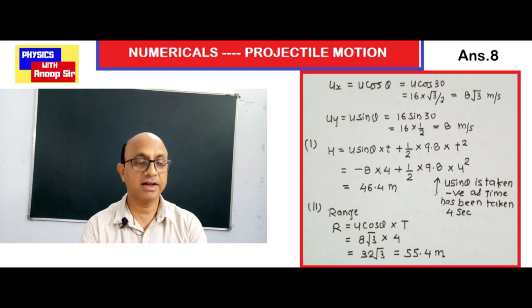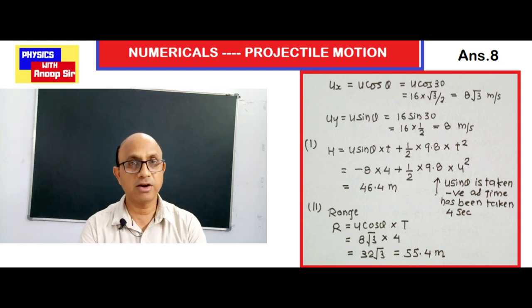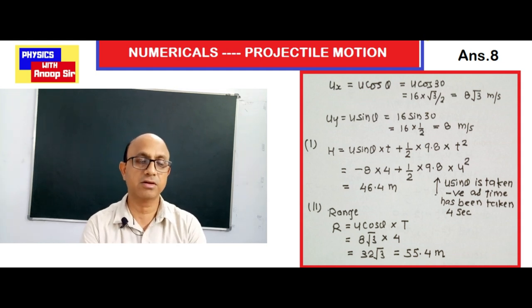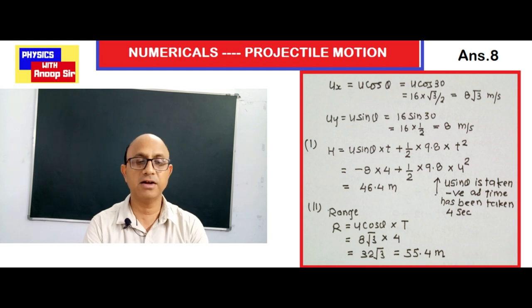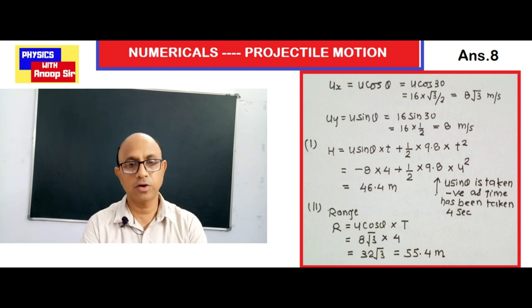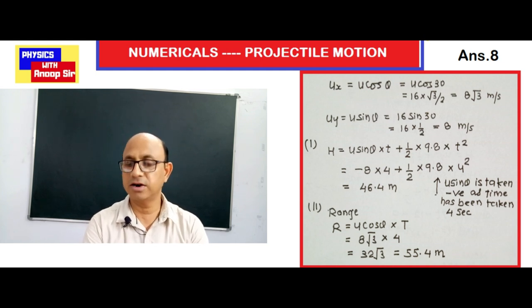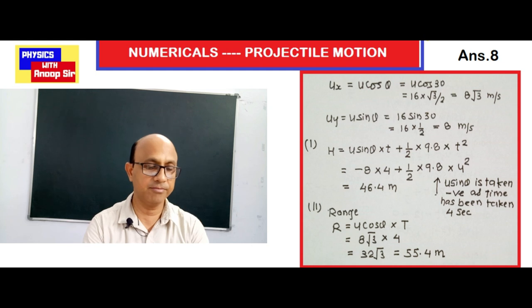First we calculate the horizontal component of velocity: u_x = u cosθ = u cos30°. Since velocity given is 16 meter per second, u_x = 16 × (√3/2) = 8√3 meter per second.